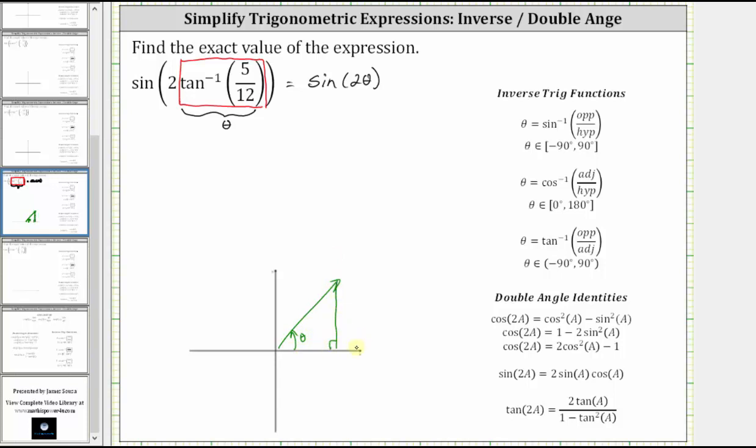Because the tangent function value is equal to five twelfths, we can label the opposite side five and the adjacent side twelve.